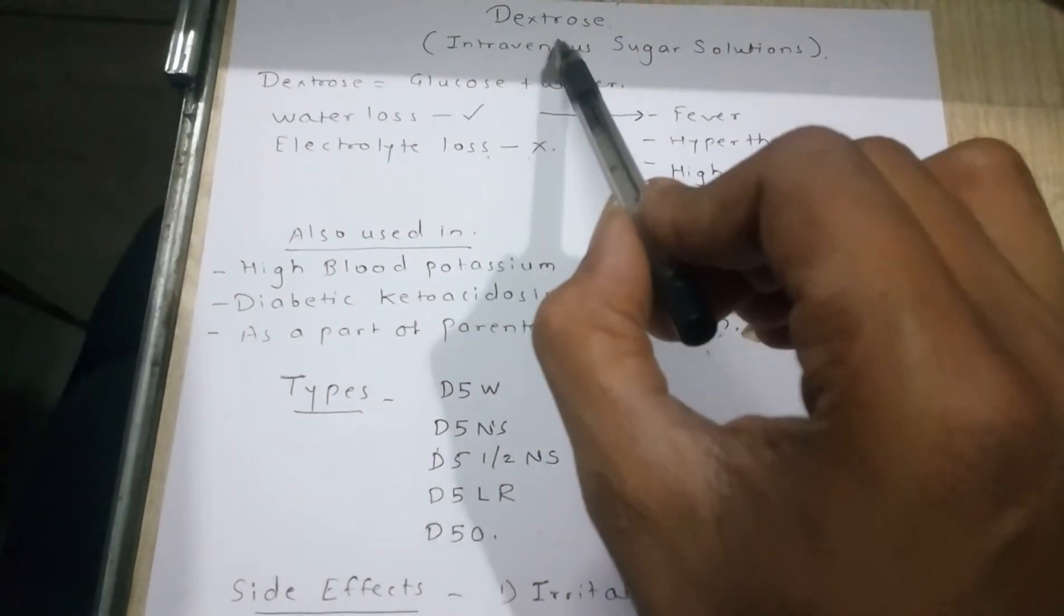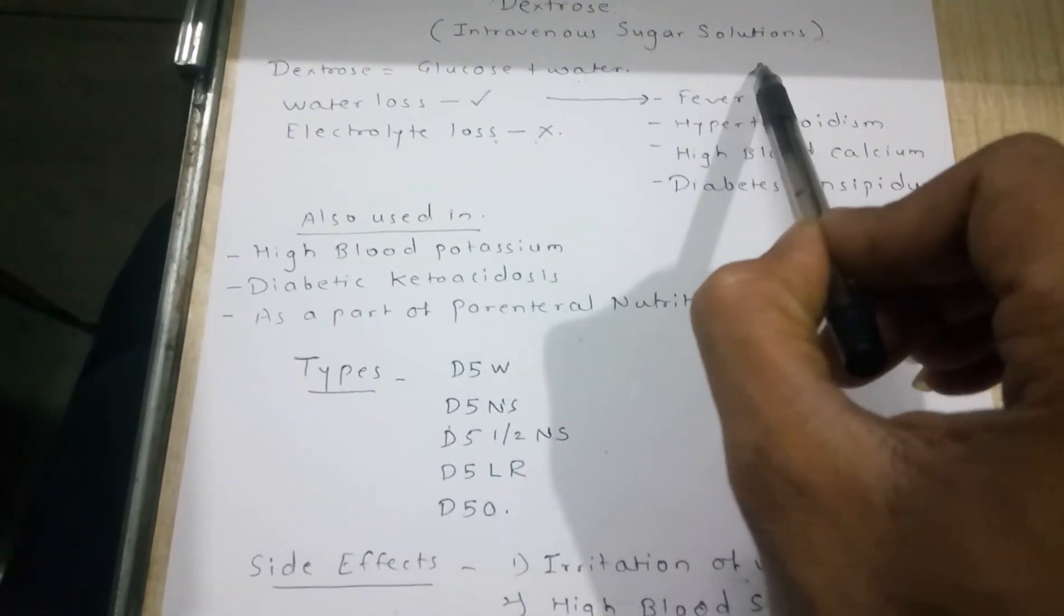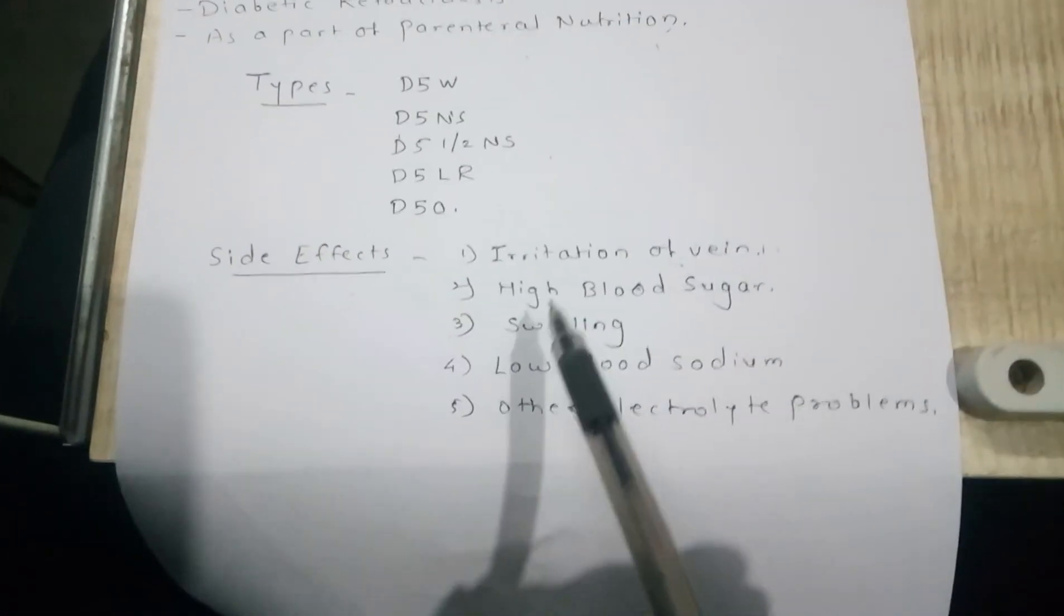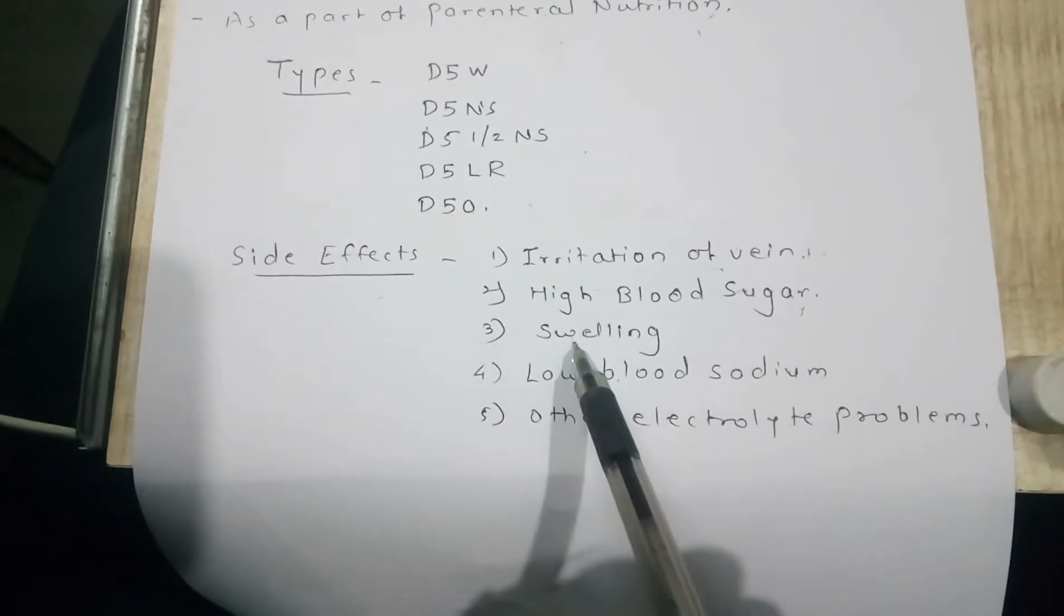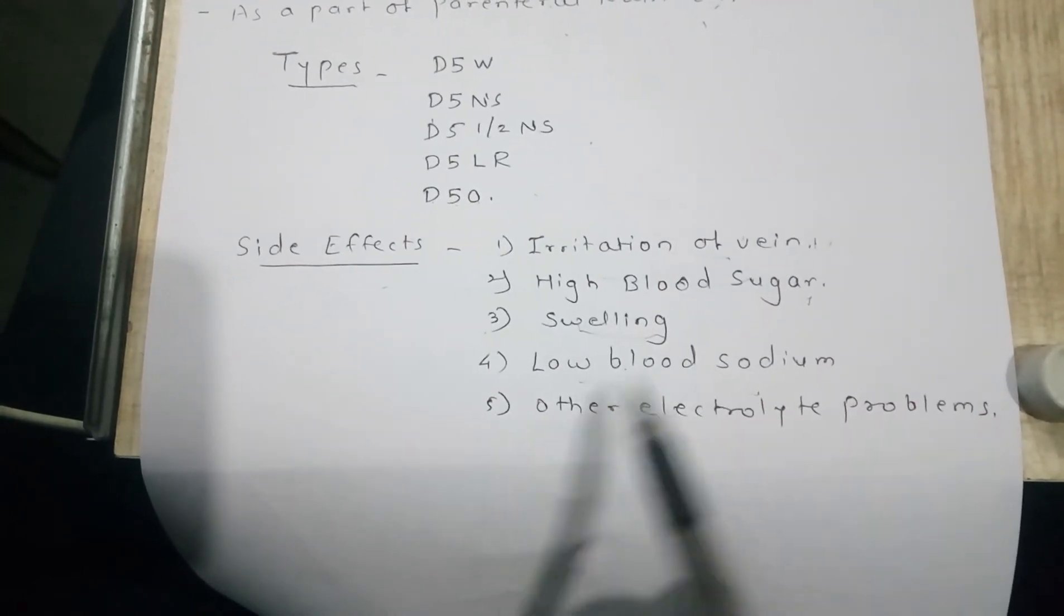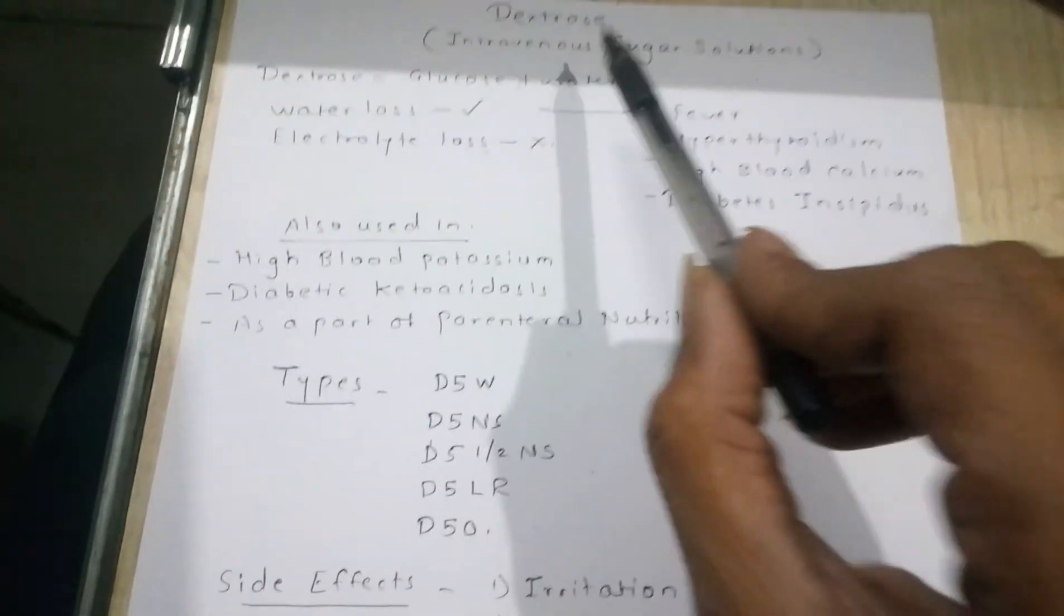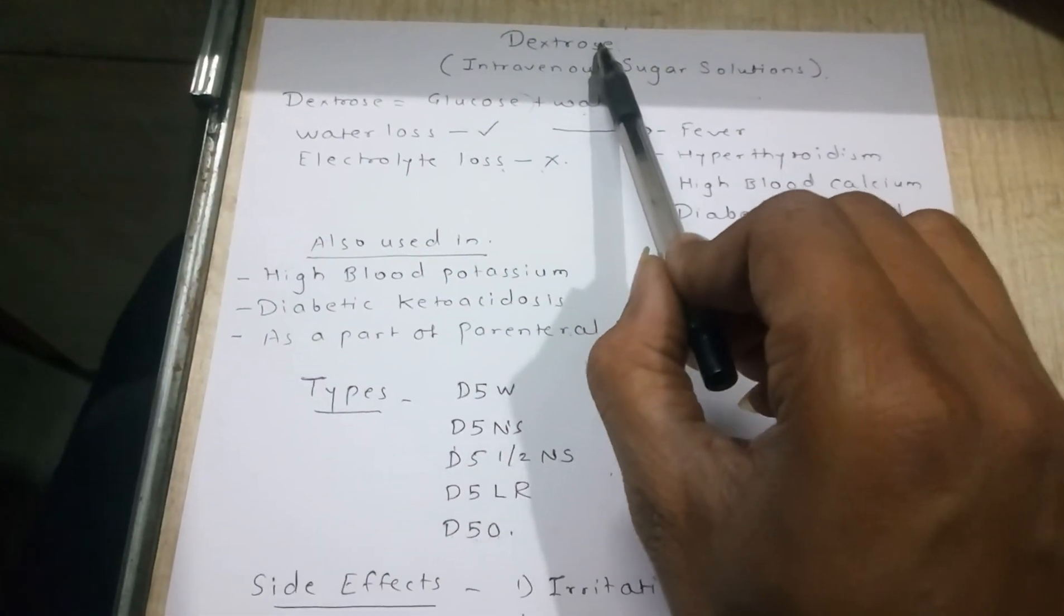Because we use dextrose as a sugar solution and there is glucose, high blood sugar can be observed. Swelling, low blood sodium, and other electrolyte problems can be seen in dextrose solution.